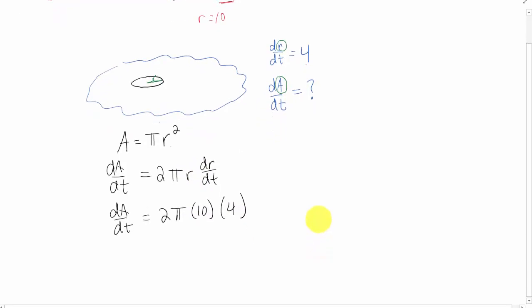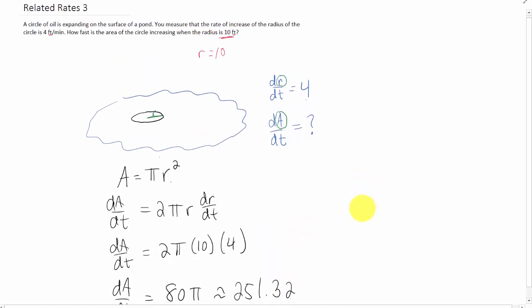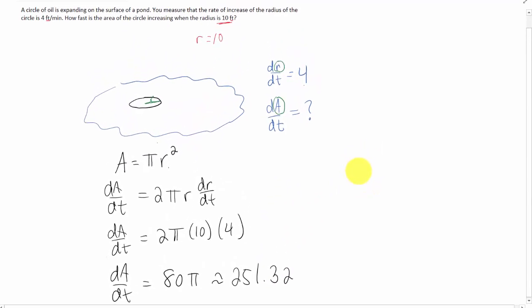Okay, all we need to do is simplify that to get an answer. All right, so 80 pi I'm getting in my calculator is approximately 251.32 units. We're talking about feet squared per minute.